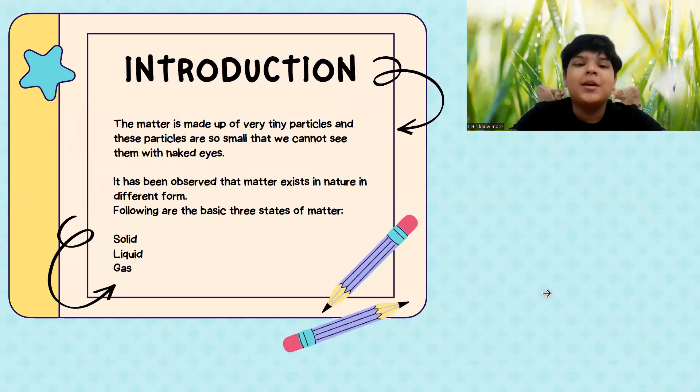Introduction. The matter is made up of very tiny particles and these particles are so small that we cannot see them from our naked eyes. It has been observed that matter exists in nature in different forms. Following are the three forms in which the matter exists: solids, liquids and gases.